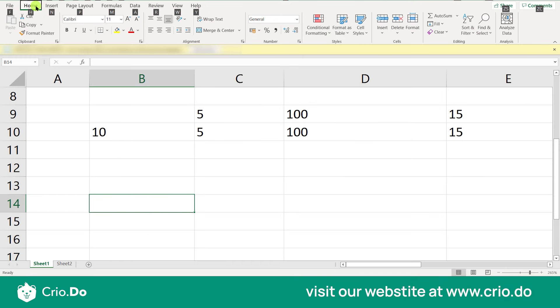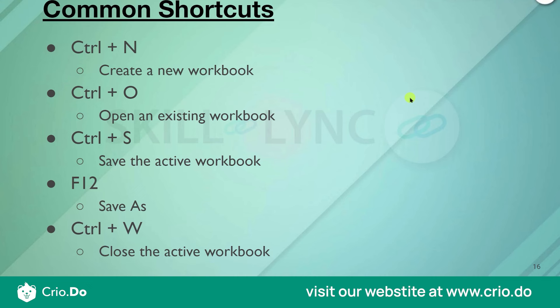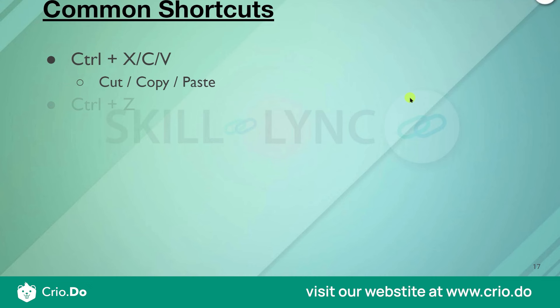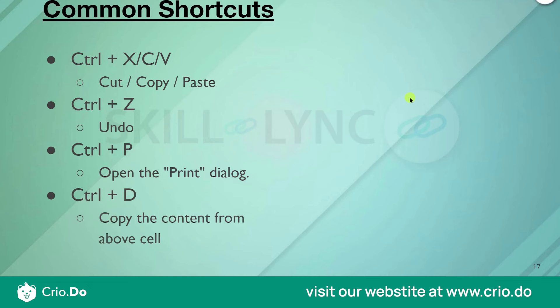Let me revise everything we've covered. Ctrl+N creates a new workbook. Ctrl+O opens an existing workbook. Ctrl+S saves the active workbook. F12 is Save As. Ctrl+W closes the active workbook. Ctrl+C, Ctrl+V, and Ctrl+X are for Copy, Paste, and Cut. Ctrl+Z is Undo. Ctrl+P opens the Print dialog. Ctrl+D copies content from the cell above. Ctrl+Space selects the entire column. Shift+Space selects the entire row. And the Alt key is used to navigate through the keyboard.